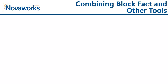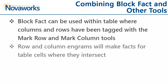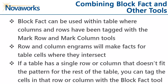The BlockFact tool can also be used within tables where columns and rows have been tagged with the MarkRow and MarkColumn tools. The row and column n-grams will create fact data for table cells where they intersect. However, if there is a single row or column in the table that doesn't fit the pattern for the rest of the table, you can tag the cells in that row or column with the BlockFact tool. An example might be a column that represents a different type of data, or a row that represents a line item concept with a different dimensional component.